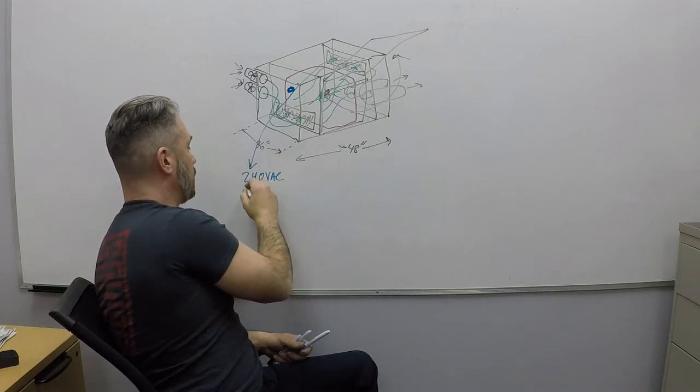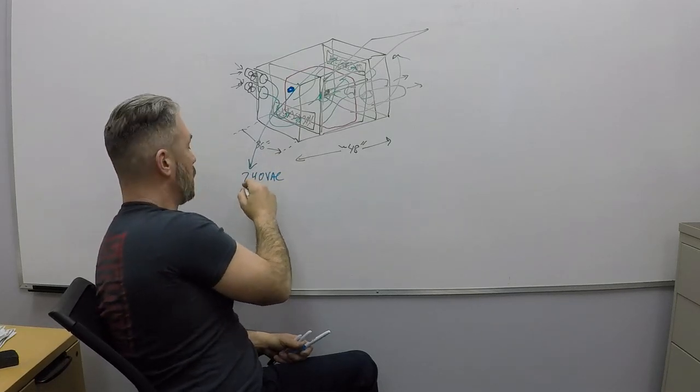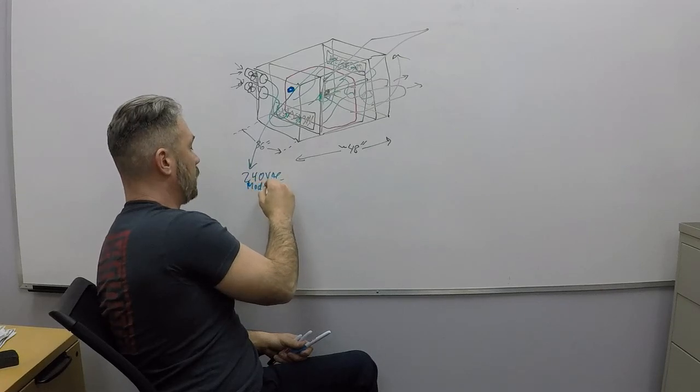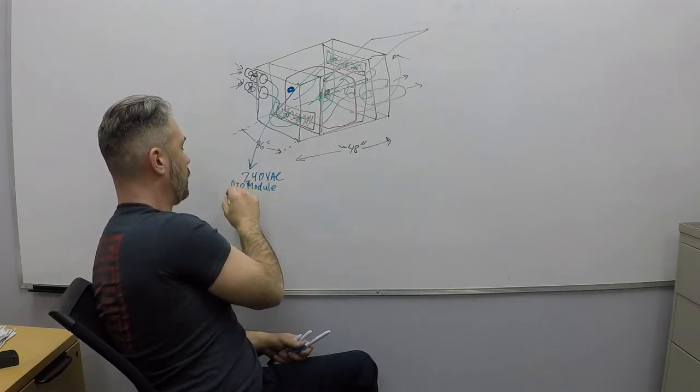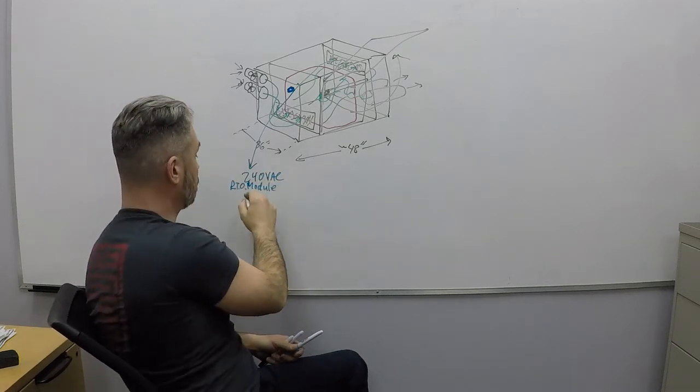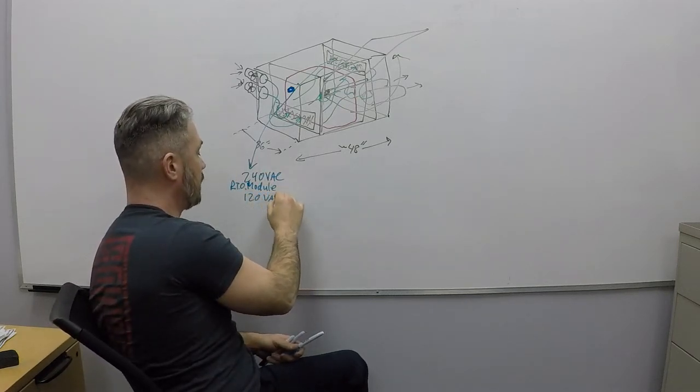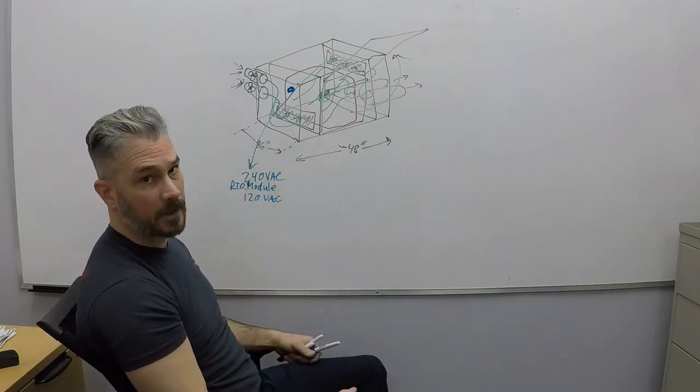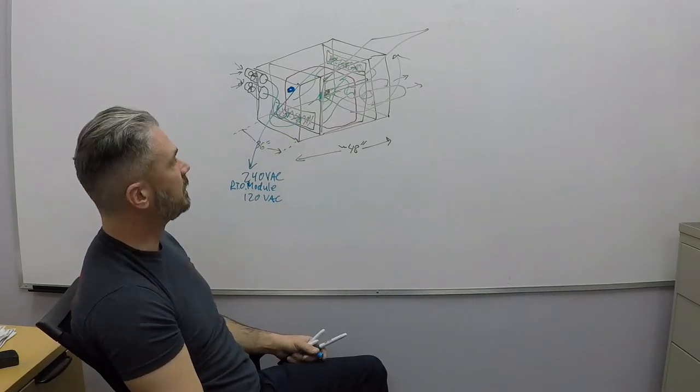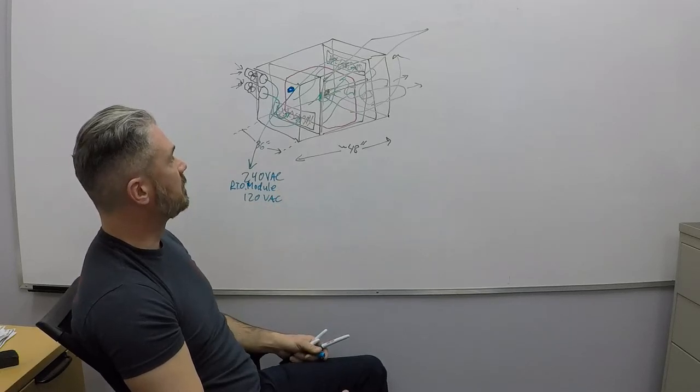And the wires coming out of it would be likely somewhere up here. That would be 240 volts AC. That would be the module, the remote turn-on module. Also want 120 volts AC. I want to take it and run it, bury the wire and run it across to the workshop. This is the gist of it.